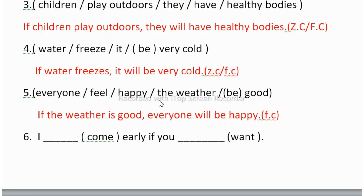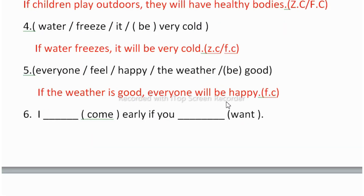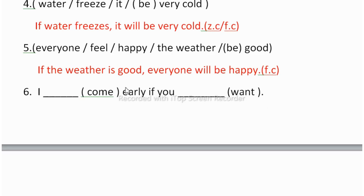The fifth one is: 'Everyone feel happy, the weather be good.' Here you have to choose first conditional: 'If the weather is good, everyone will be happy' — if + simple present + simple future.